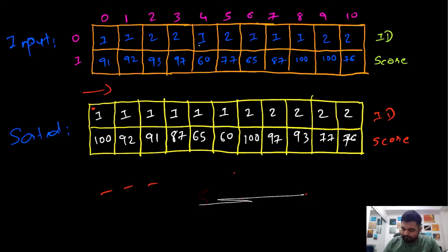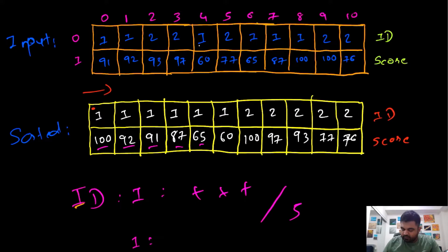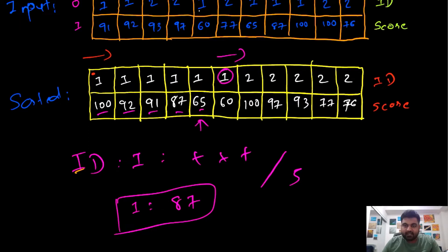Let's see that in action. For ID number one, we iterate and find the top five values, keep adding them up, then divide by five. So for ID number one, the average is 87. Once we reach that stage and have already calculated the average, if we keep iterating we find one more entry with ID number one, which is the 60. Because this is already sorted and we have already calculated the top five entries, we don't need to use this case — we simply ignore it and move forward until we find the next ID.